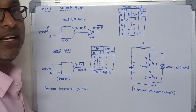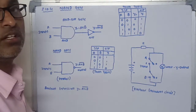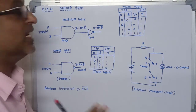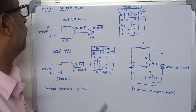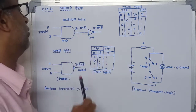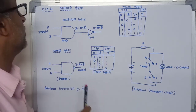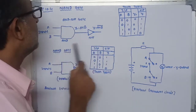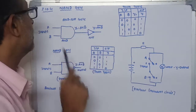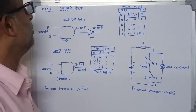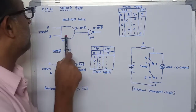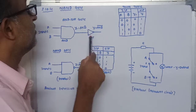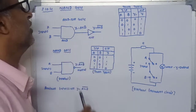NAND gate is a combination of two basic gates: one AND gate and another NOT gate. These two gates are connected in series as shown in this figure. The output of the AND gate can be inverted by using this NOT gate.